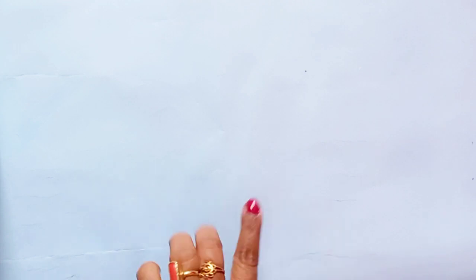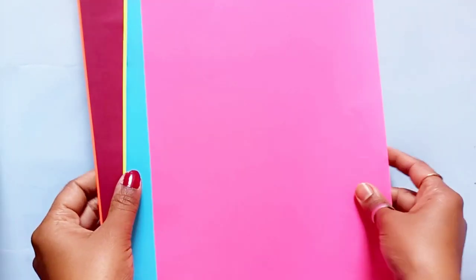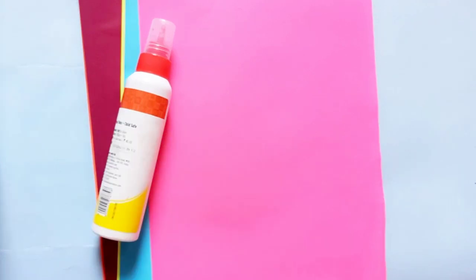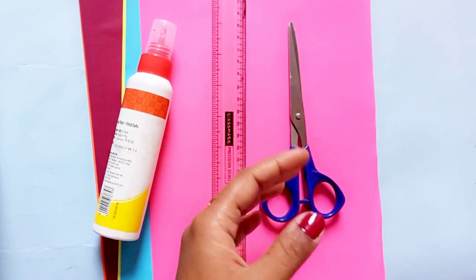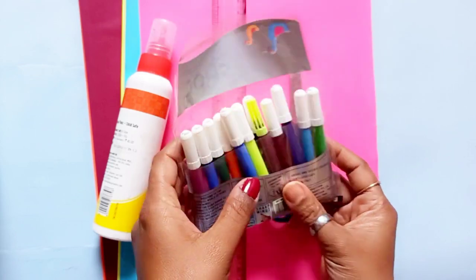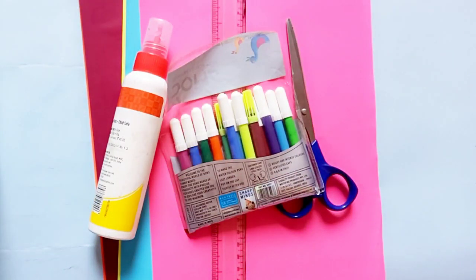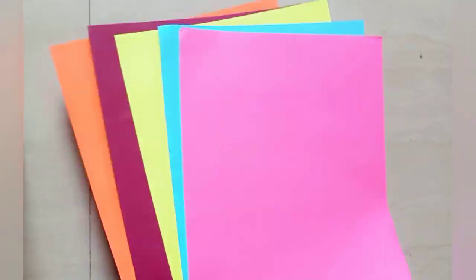Hello viewers, today I am going to make a 2D shapes project. In this project I am going to use chart paper, some color papers, white glue, scissor, scale, and some color sketches to write and color something after making this project. I will explain the project, then you will get an idea of how to explain this project. So let's start.